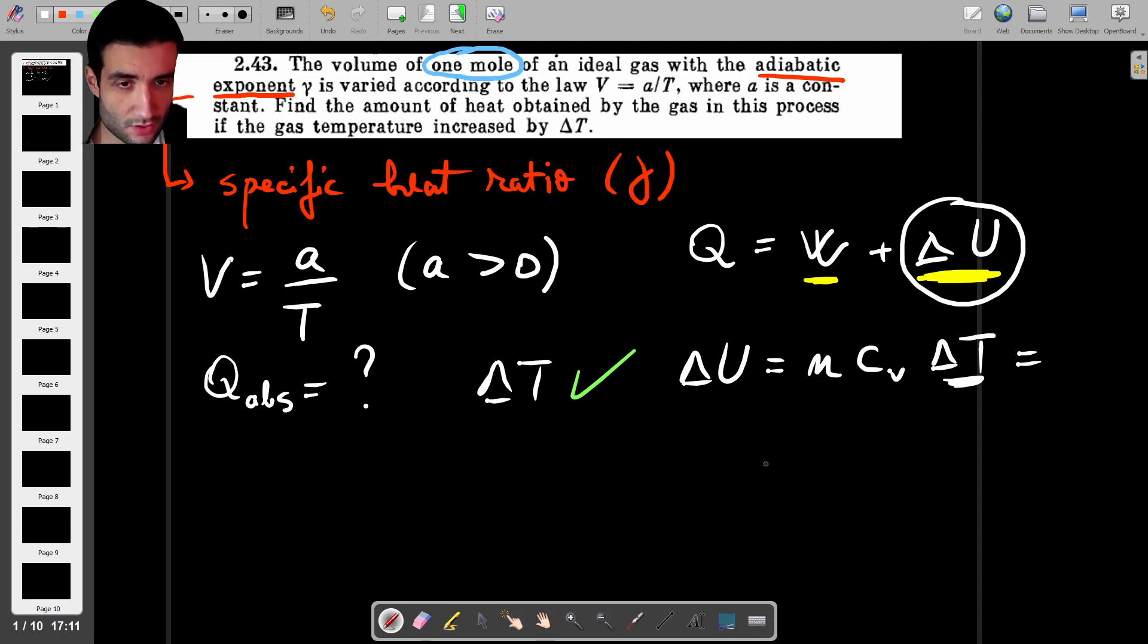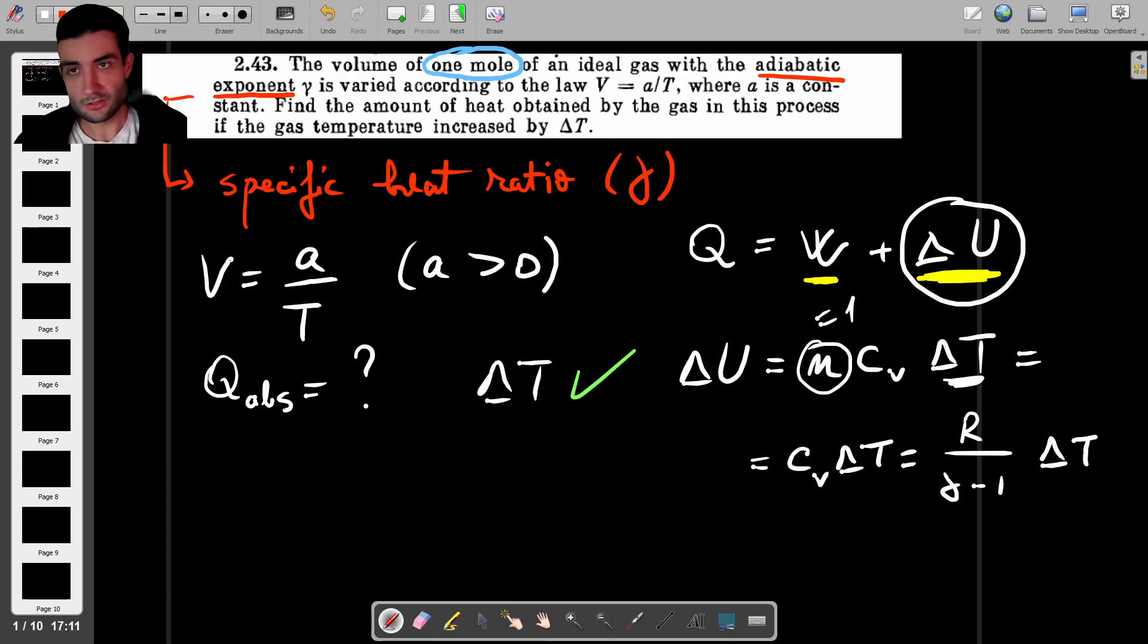Now we can rewrite this as N but the question is saying we're dealing with one mole so we're going to ignore N. We're going to say that N is equal to 1. So this is just Cv times delta T and we know Cv is just R over gamma minus 1 times delta T.